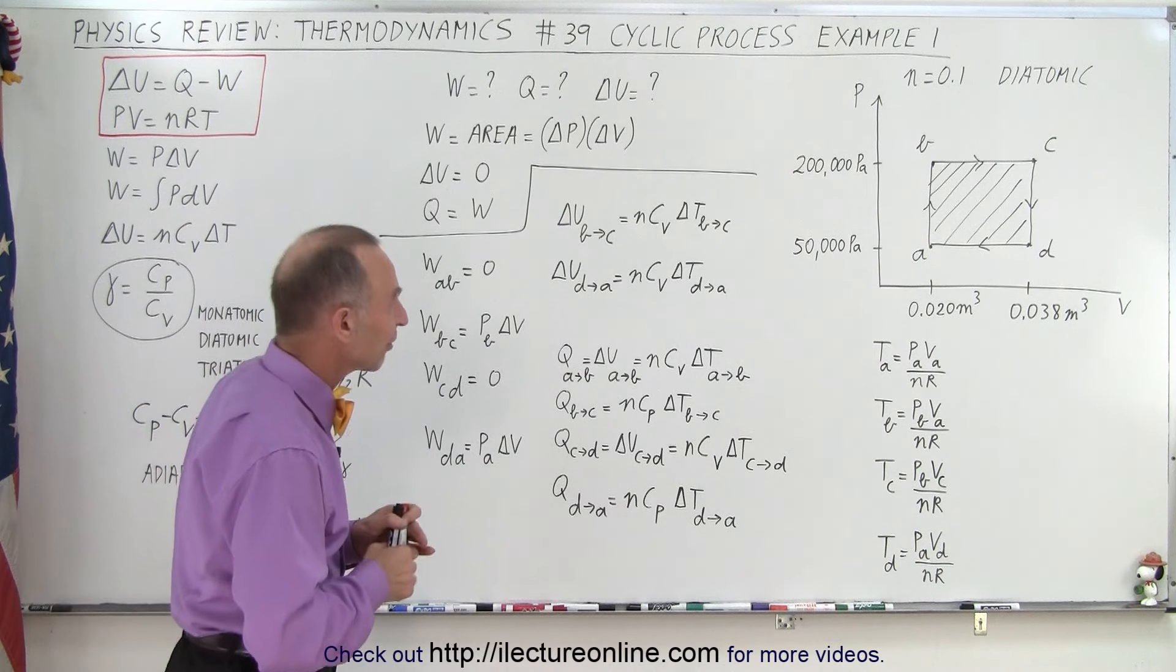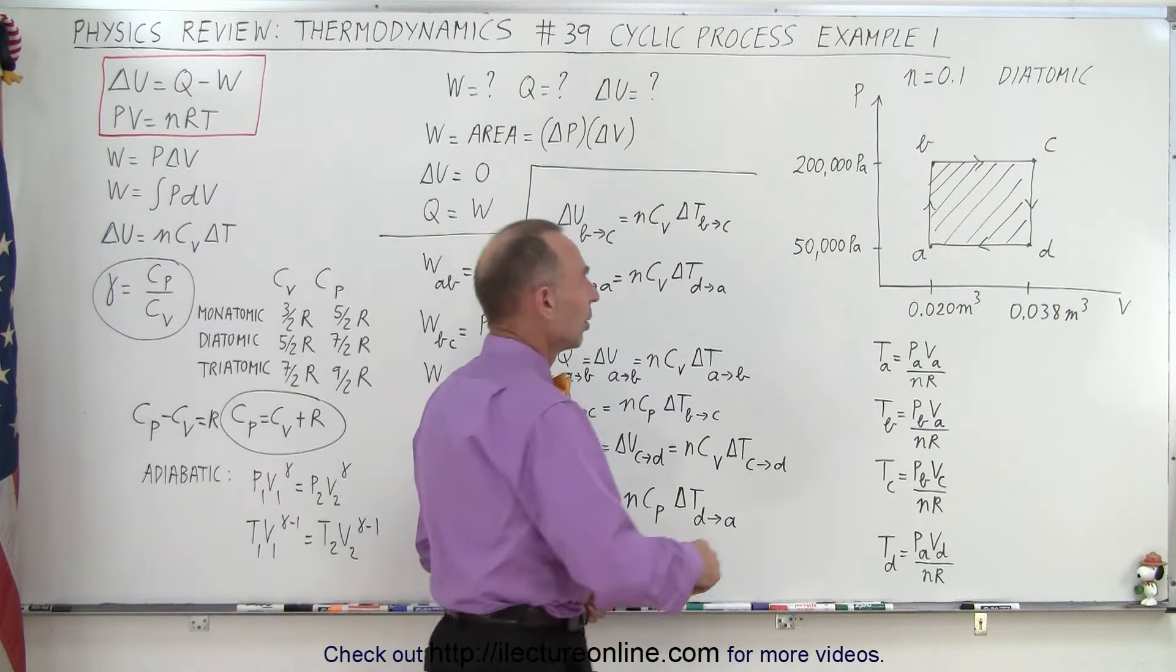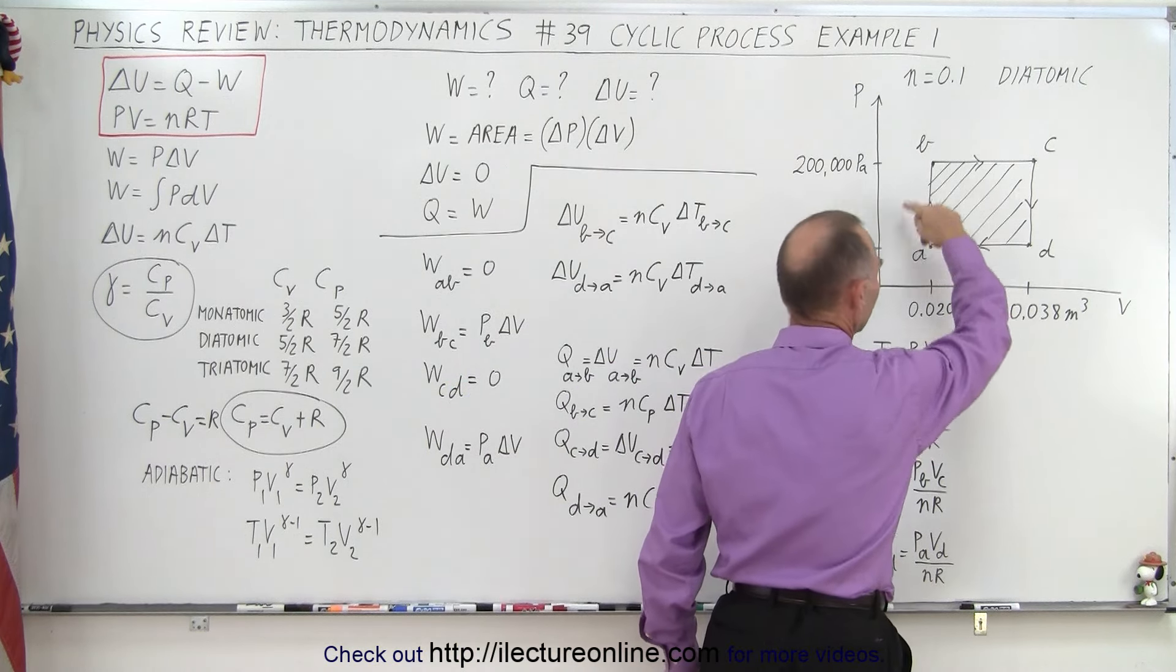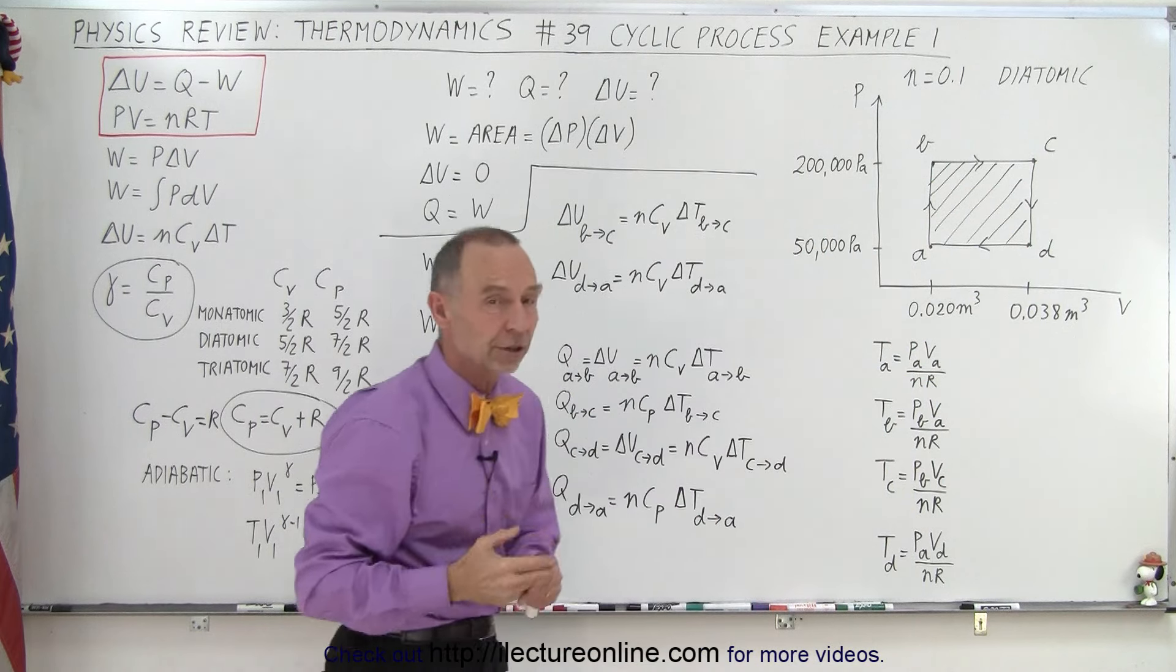So here we have a very straightforward cyclic process. The process goes from A to B to C to D and back to A. So that's why they call it cyclic. You end up in the same place you started.